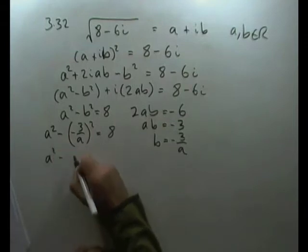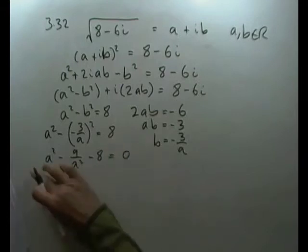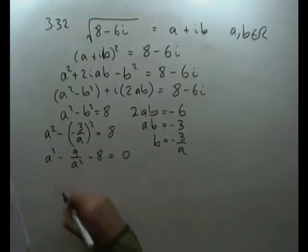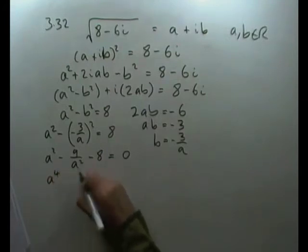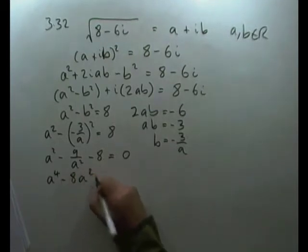So a² - (-3/a)² = 8, which gives a² - 9/a² - 8 = 0. Multiplying through by a²: a⁴ - 8a² - 9 = 0.